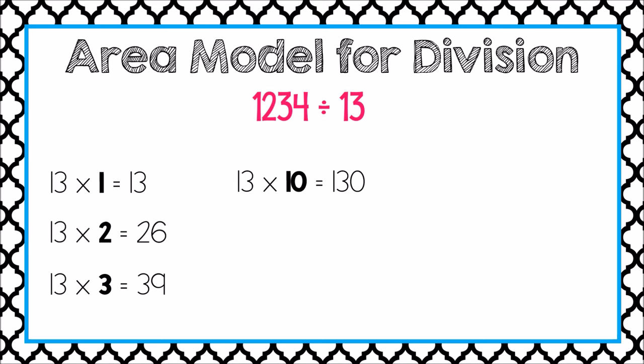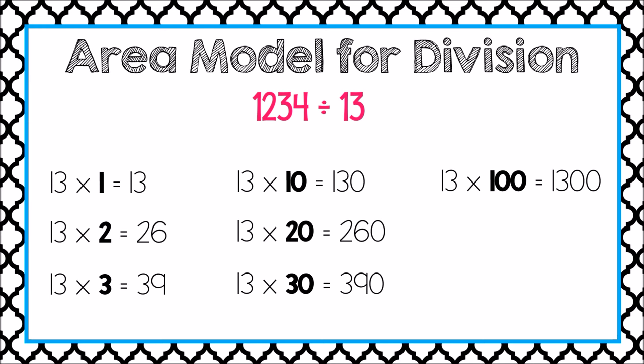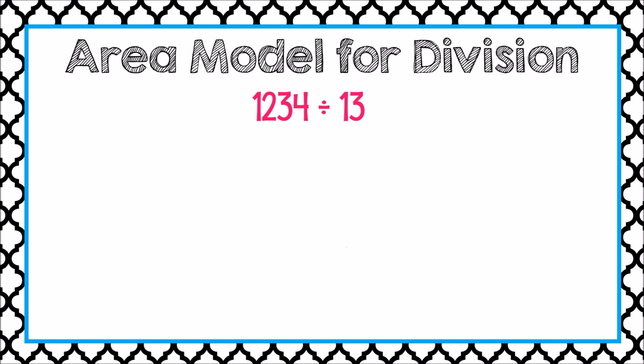Alright, what else do I know about 13? Well, if I know 13 times 1, it helps me know 13 times 10. That's 130. If I know 13 times 2, it helps me know 13 times 20. That's 260. And if I know 13 times 3, it helps me know 13 times 30. That's 390. Well, I also know 13 times 100 is 1,300, but I really don't need to know that for solving this problem. Now that I've thought about ways to multiply 13, I'm going to use that to help me divide by 13. Remember, multiplication and division are related.